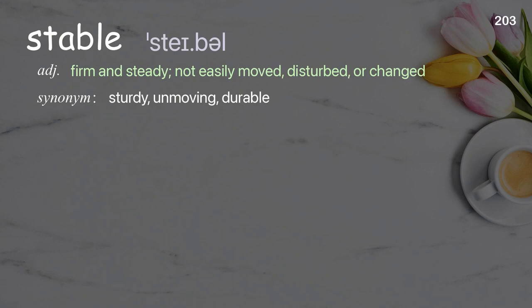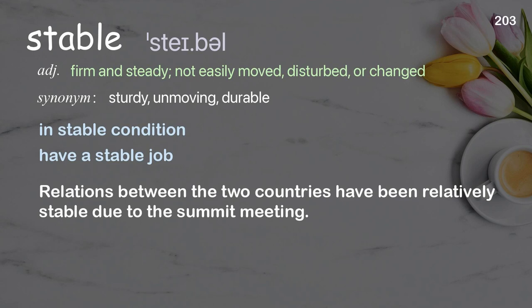Stable: not likely to change or fail; firmly established. Examples: stable condition, have a stable job. Relations between the two countries have been relatively stable due to the summit meeting.